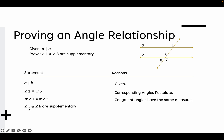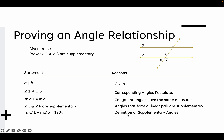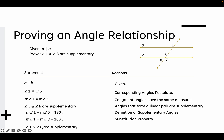We know that angle 5 and angle 8 are supplementary because angles that form a linear pair are supplementary. So the measure of angle 1 plus the measure of angle 8 equals 180 degrees, by the substitution property. Therefore, angle 1 and angle 8 are supplementary angles, by the definition of supplementary angles.